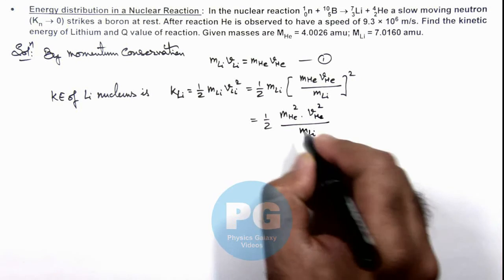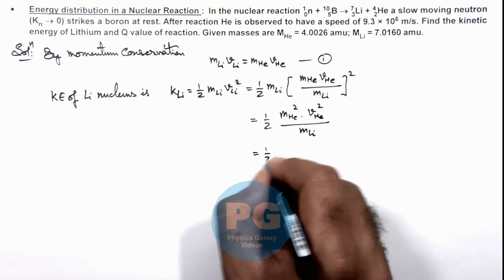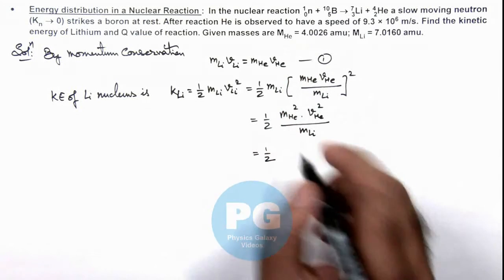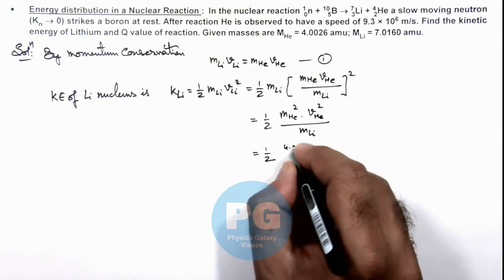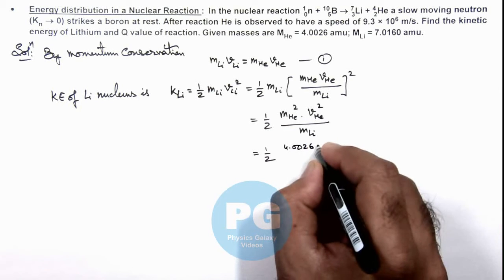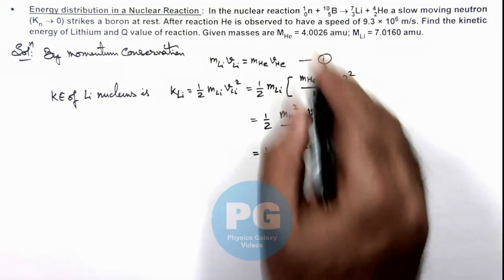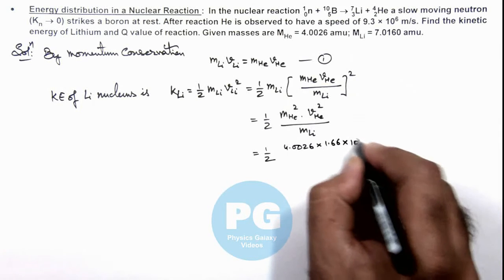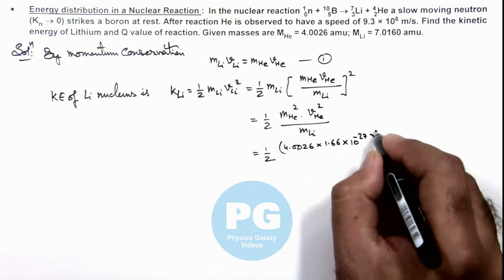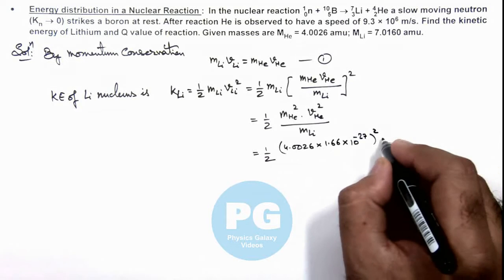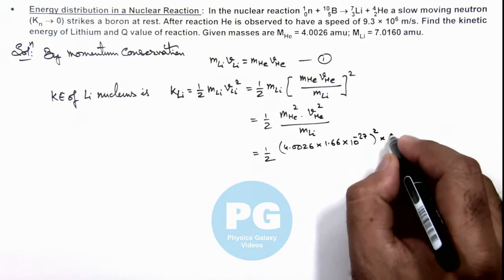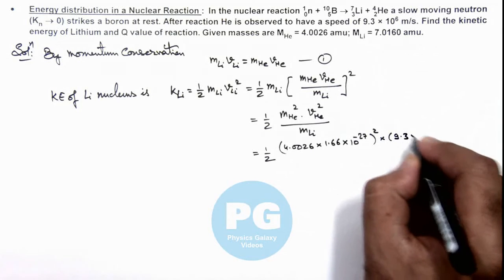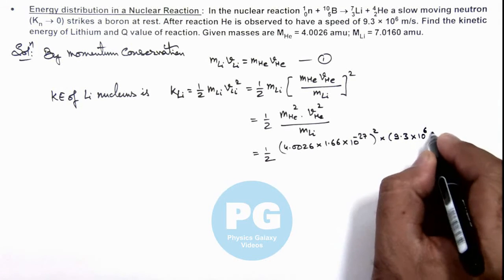Now if we substitute the values here, it gives us half: mass of helium is 4.0026 amu, so this is 4.0026 × (1.66 × 10⁻²⁷ kg), this squared, multiplied by the speed of helium which is 9.3 × 10⁶ m/s squared...